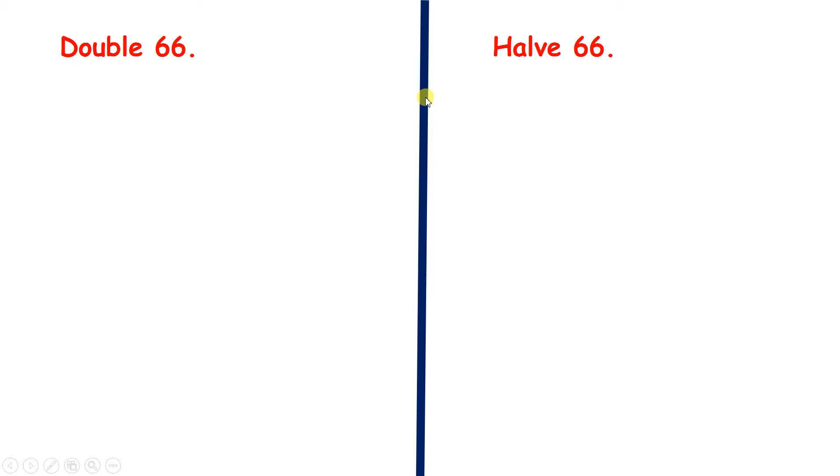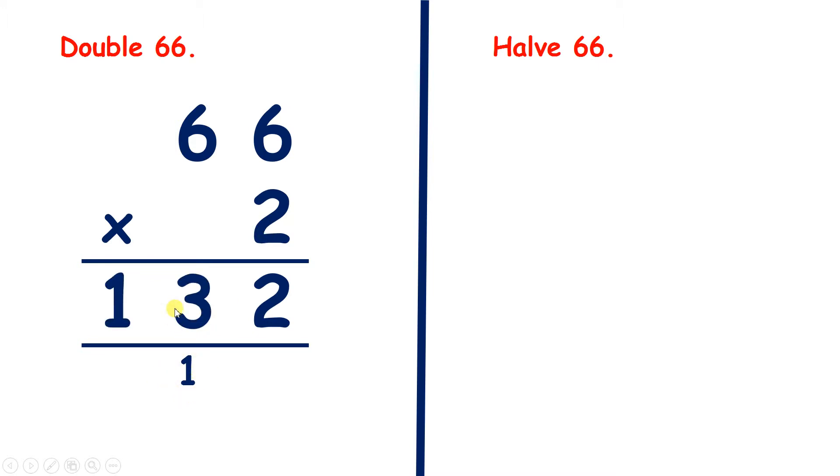Now pause the video and see if you can double and halve 66. We have 66 times 2. 6 times 2 is 12, so we write 1 below our tens and 2 in our units. Now on to the tens: 6 times 2 is 12, plus 1 is 13. So double 66 is 132.